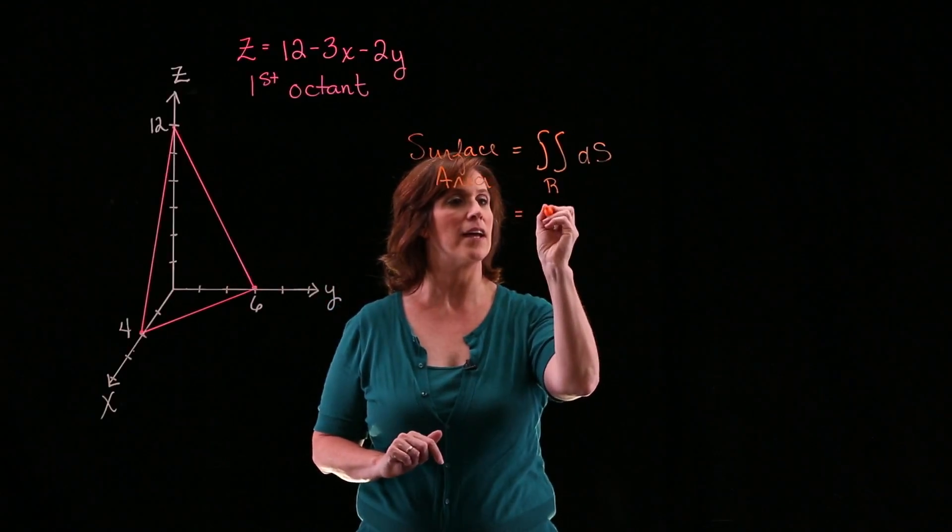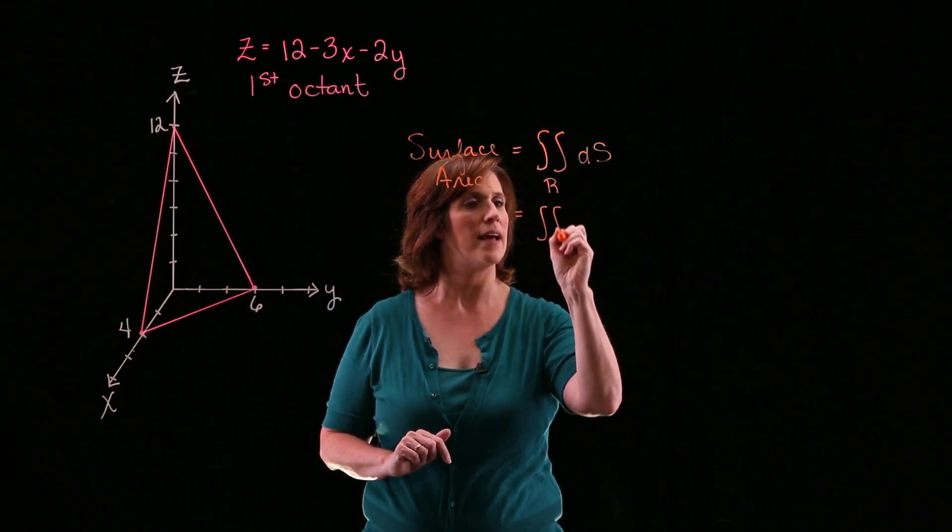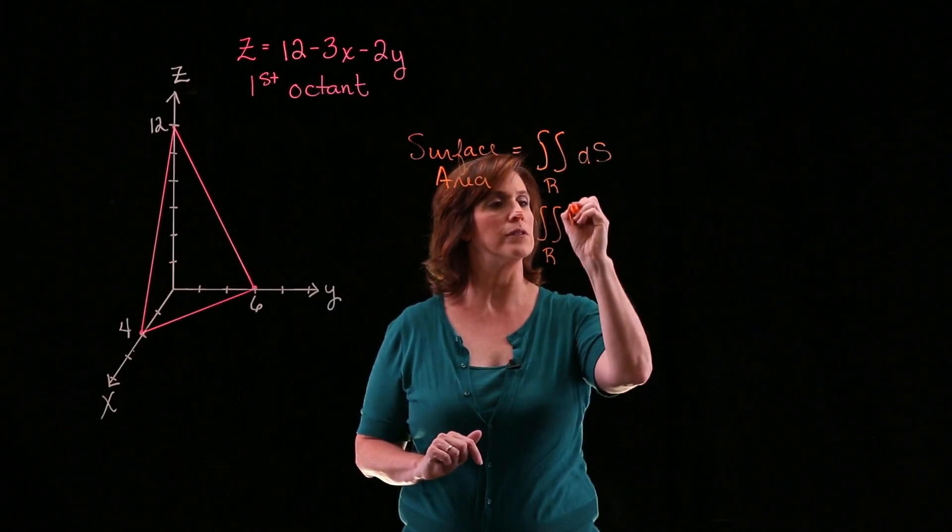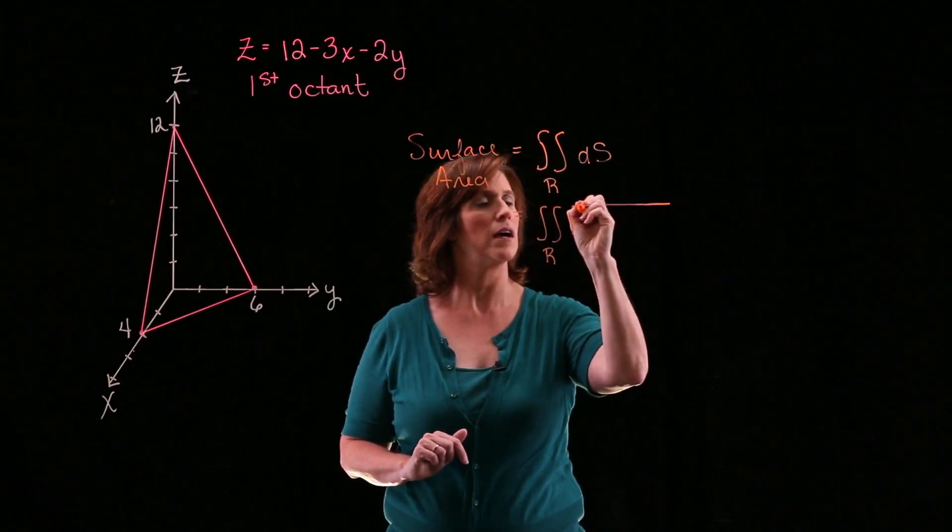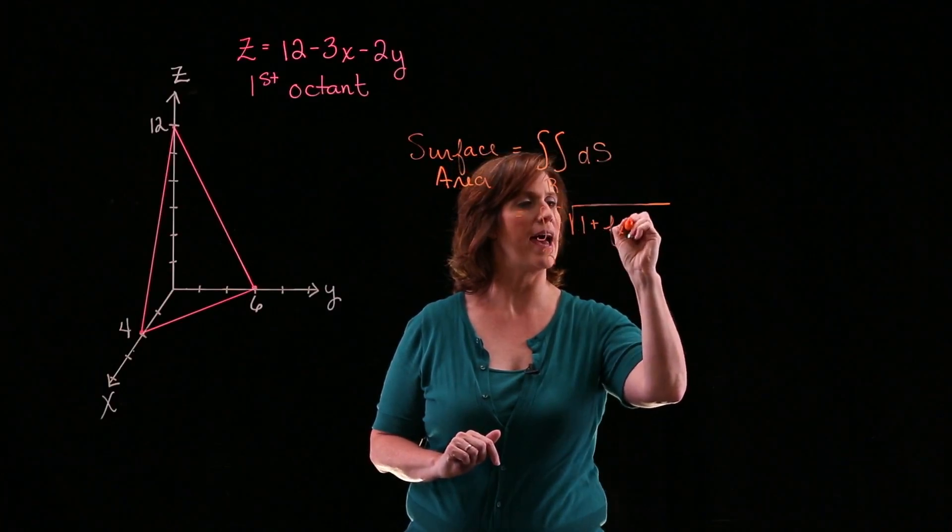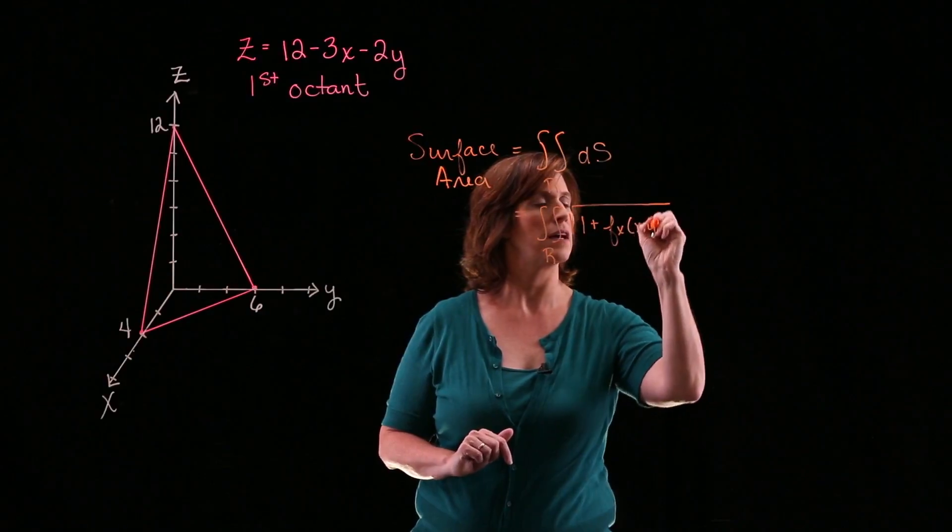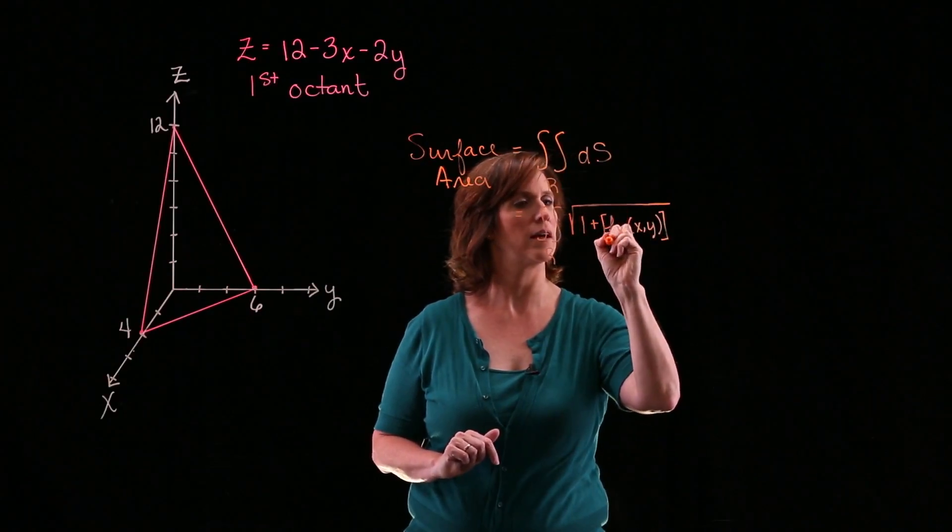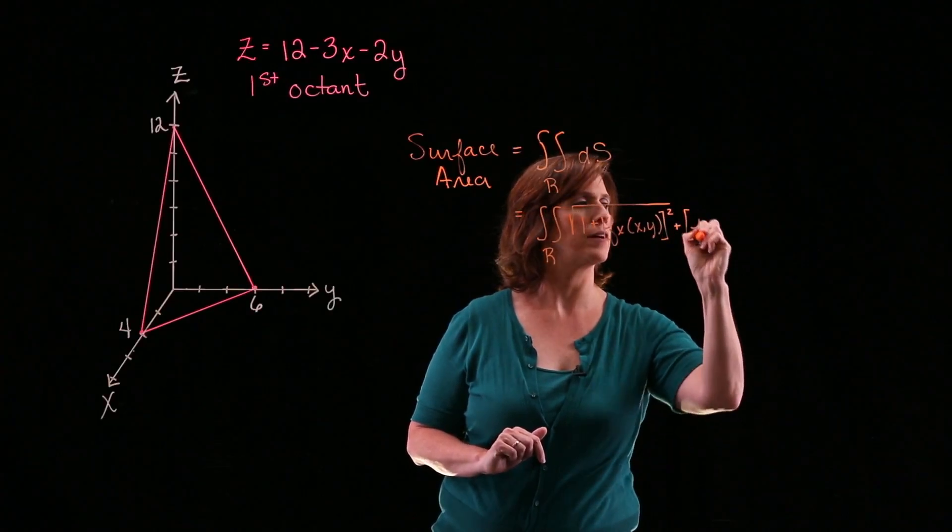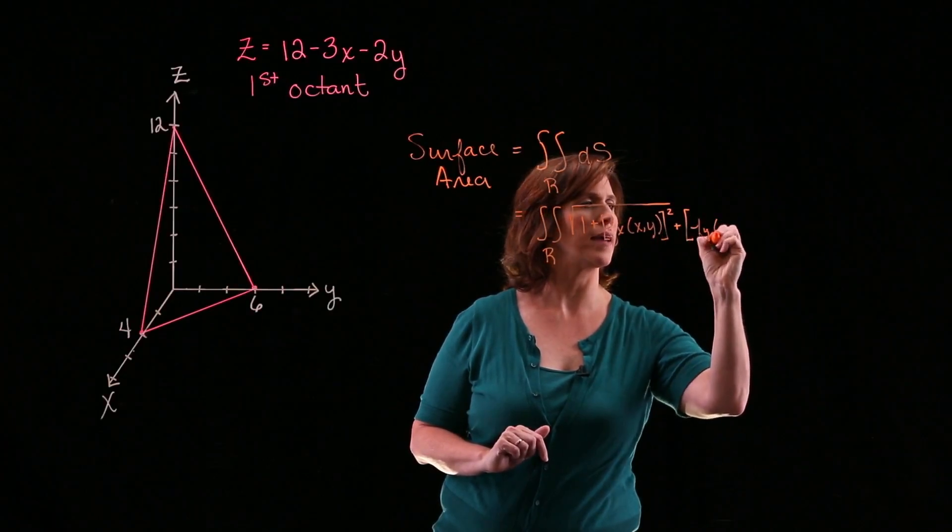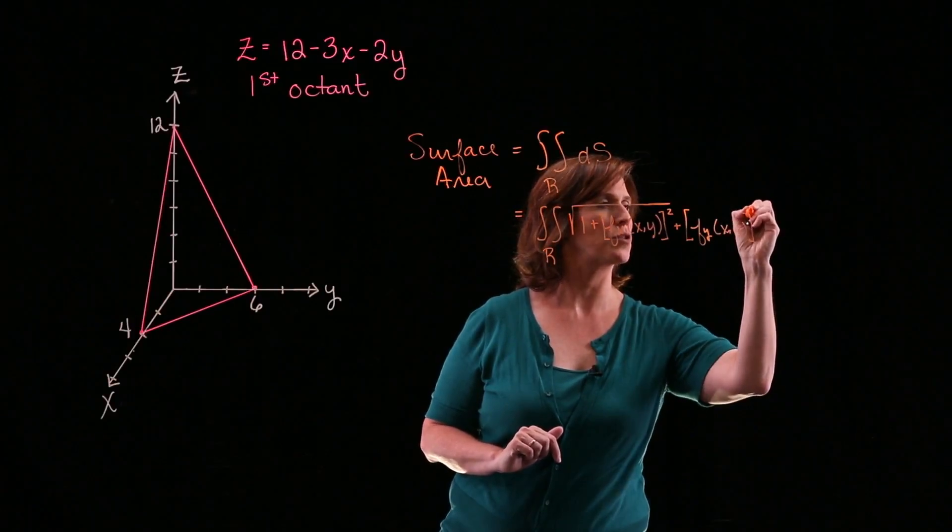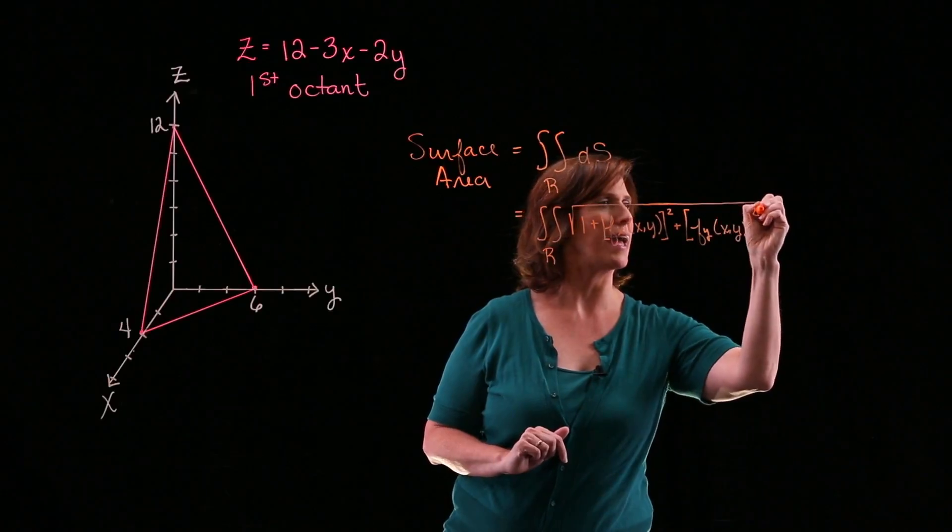So my surface area equals the double integral over the region ds. And then I can also write that as the double integral over the region of the square root of 1 plus the partial of f with respect to x squared plus the partial of f with respect to y squared dA.